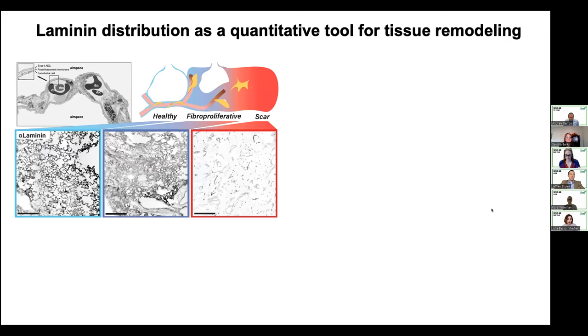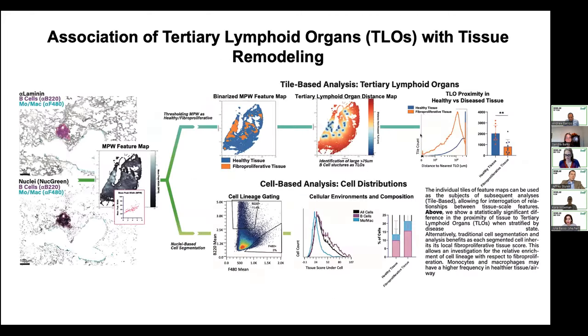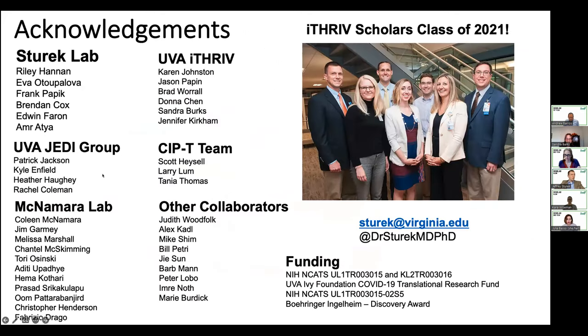Riley is a postdoc in the lab who loves taking pictures. We're looking at laminin, which is a basement membrane protein for tissue remodeling. We map laminin over the tissue, do a histogram of laminin staining, and correlate that with disease to show that immune cells are associated with fibroproliferative changes in the lung.